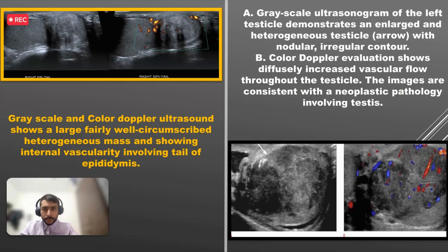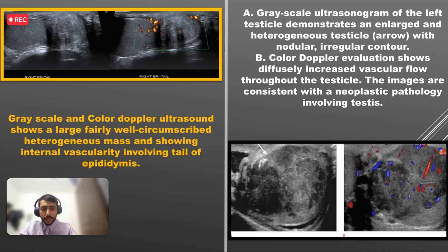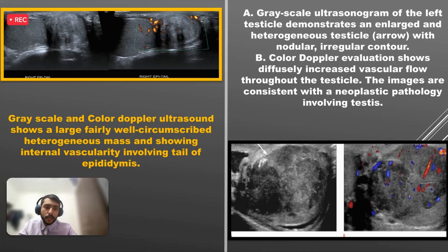The first image shows an adenomatoid tumor of the epididymis tail, with a heterogeneous echotexture and evidence of mild vascularity — it is the most common benign tumor of the epididymis. The last image shows a heterogeneous echotexture with vascularity within the testis, indicating testicular cancer. Testicular carcinoma is divided into germ cell tumors and non-germ cell tumors; germ cell tumors are further divided into seminomatous and non-seminomatous types, with seminomatous tumors having a fairly good response to radiotherapy.